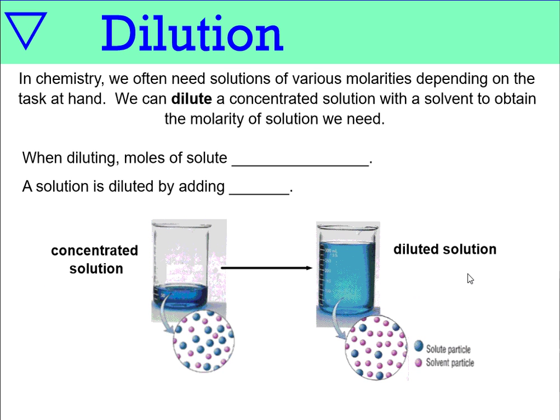In chemistry, we often need solutions of various molarities depending on the task. And so we'll have labs where we need a 0.15 molar solution or 0.2 molar solution. And we may have to start from a stock solution that's 12 molar. And so we dilute, and we dilute with water. And when we dilute, the number of moles of the solute we're working with won't change. The solute's diluted by adding solvent, and 99 times out of 100 in chemistry, it's going to be water.